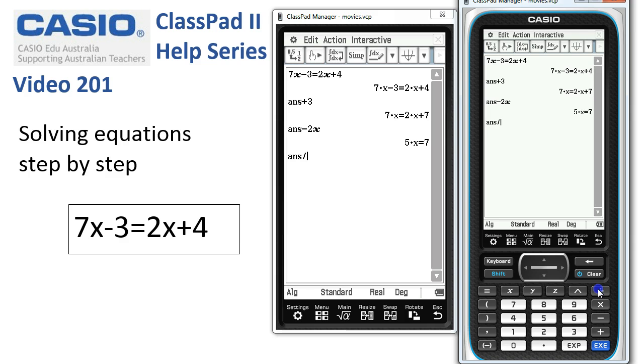The last step is to divide both sides by 5. Tap execute. And we have a solution.